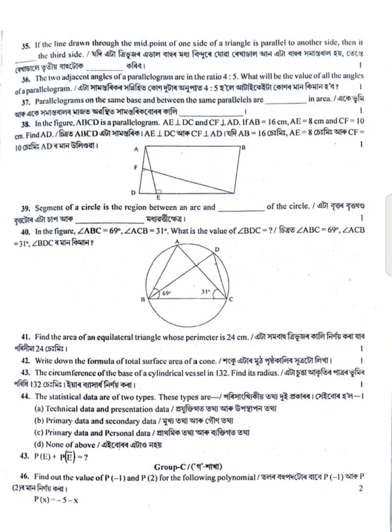Then one-mark and two-mark answer questions. Find P(1) and P(2) for the following polynomial: P(x) is equal to negative 5x.